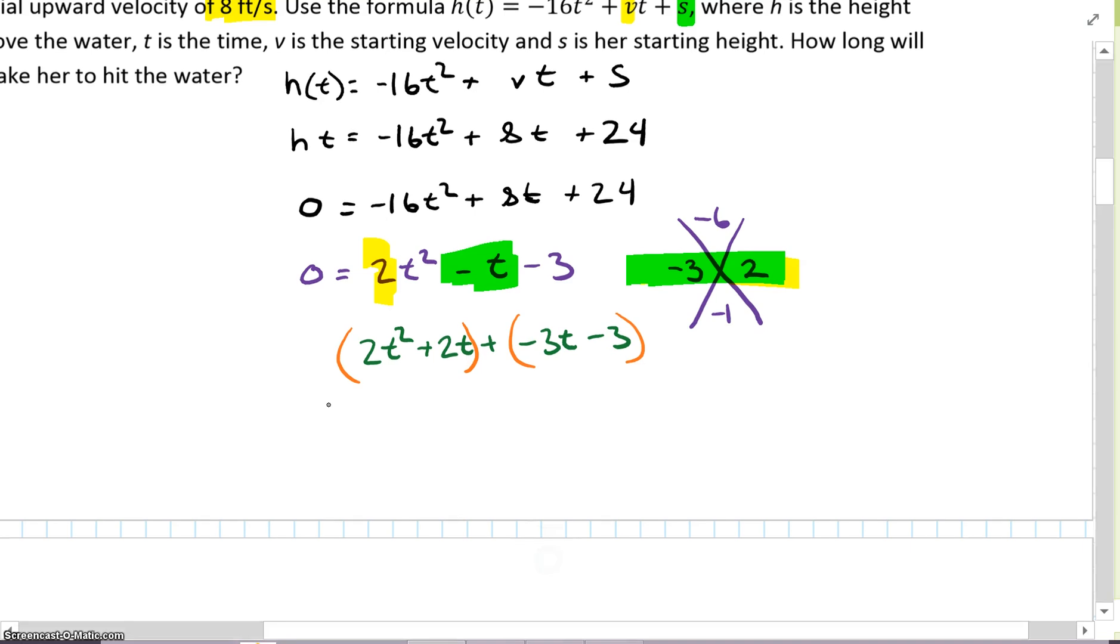Let's factor. What can I pull out on the first term? 2t. What's left? t + 1. What can I factor out on the right term? -3. What's left? t + 1. So I'm going to get (2t - 3)(t + 1).